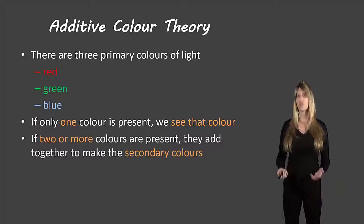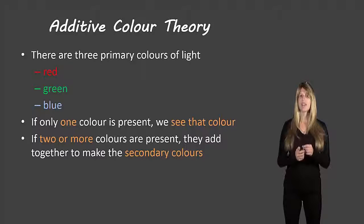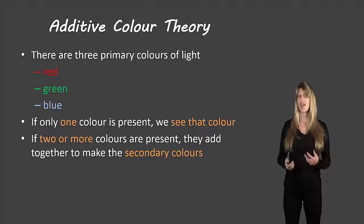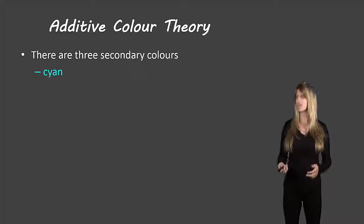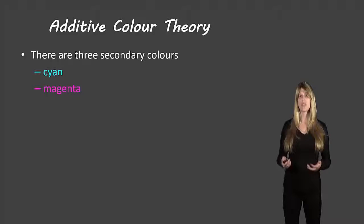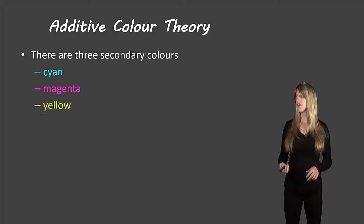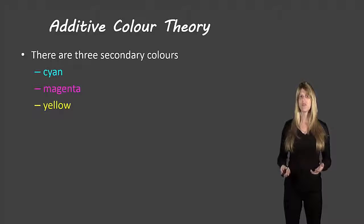If two or more colors are present, they add together to make the secondary colors. Our secondary colors are cyan, which is like a bluish-green color; magenta, which is like a pinkish-purple color; and yellow. So those are our three secondary colors.